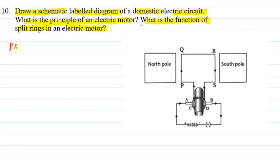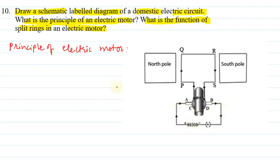Principle of electric motor. Diagram ye hai: North pole, south pole, armature hai. Ye split rings se hai. Ye carbon brushes se connected hai, jis se ki external circuit me hai. Ye battery hai aur ye plug hai.